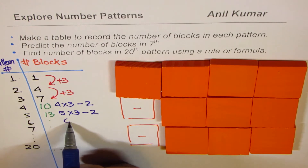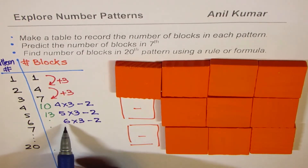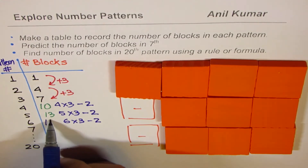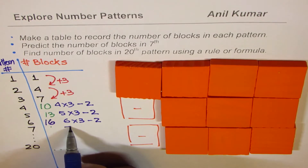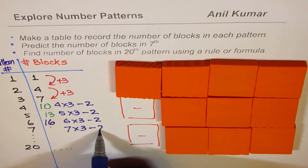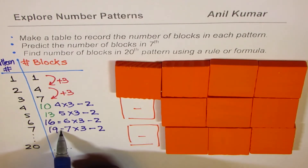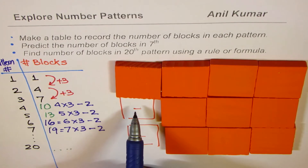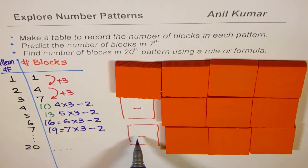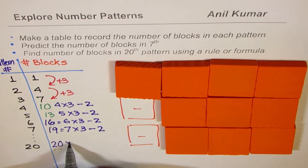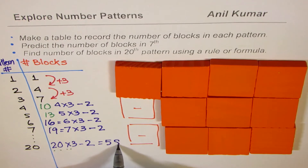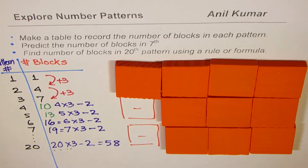5 times 3 is 15, but if I take away 2, I get 13. So for the next one, it should be 6 times 3, take away 2. 6 times 3 is 18, and take away 2 is 18 minus 2, which is 16. For the 7th, it should be 7 times 3 which is 21, take away 2 — you get 19. So that is how we get a rule. Once you add 3 each time, it is as good as multiplying by 3. Then you have to see how we started — we took away 2. So here it should be 20 times 3, take away 2. 20 times 3 is 60, and take away 2 is 58. So that is how you can make a rule and find the number of blocks in any pattern.